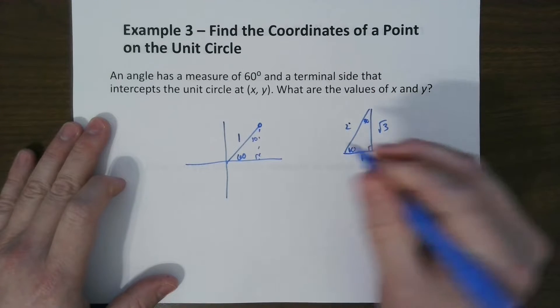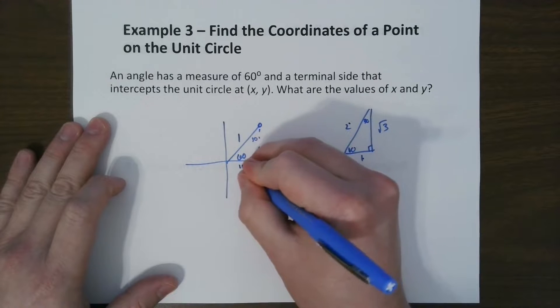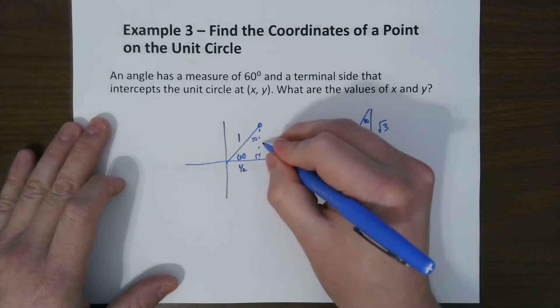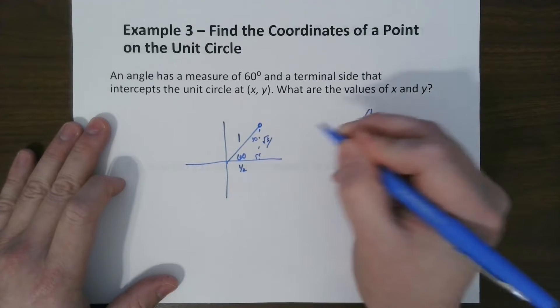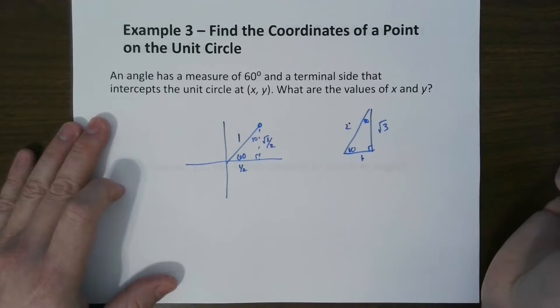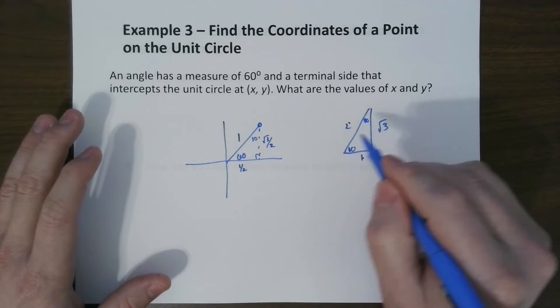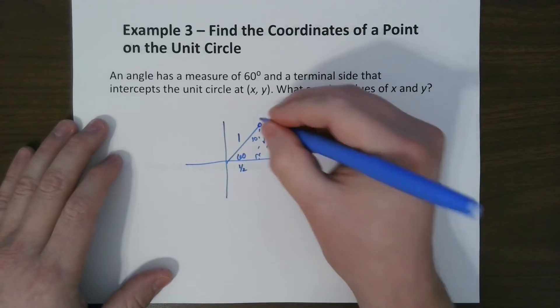right? So if this is 2, this would be 1 half, that's another way of looking at it, and radical 3 over 2, if you use this pattern, if you just half this whole thing. And that basically gives you what it is.